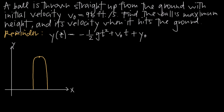Before we generate the position function, we want to set up a diagram and collect a couple pieces of information. The ball starts at an initial point, is thrown directly upward, reaches its maximum height at the top, and then comes back down and hits the ground. With a vertical motion problem like this, we're always interested in three points: the initial point, the maximum height, and the end point when it hits the ground. And we're interested in three pieces of information at each of those points: position, velocity, and time.